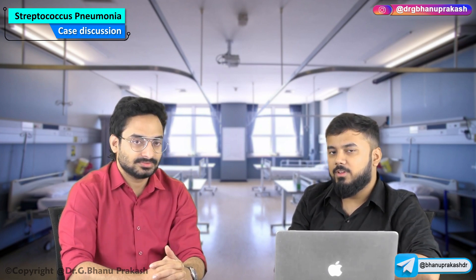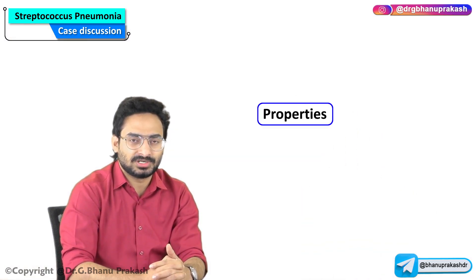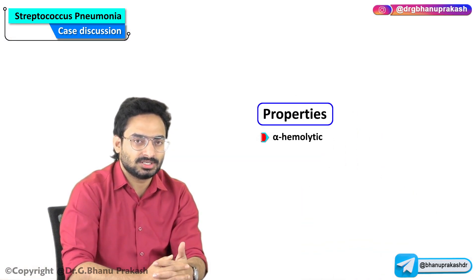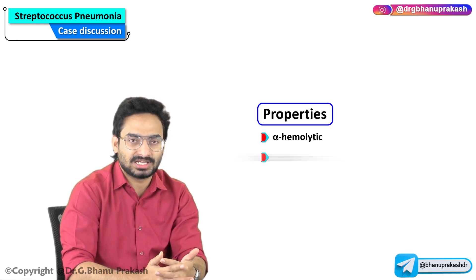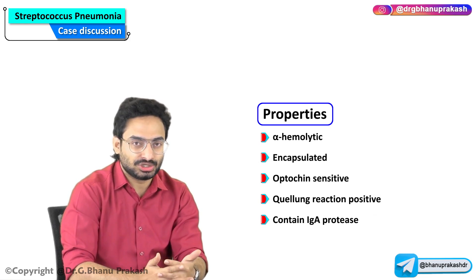Can you tell me what are the properties and how many properties we have? Basically there are five properties. First one is alpha hemolytic, second one is encapsulated, third one is optochin sensitive, the fourth one is bile solubility reaction positive, and fifth one is it contains IgA protease.